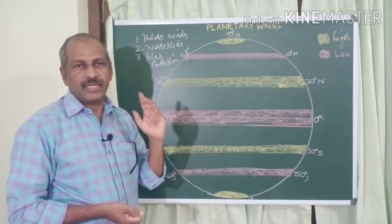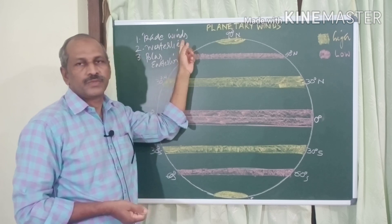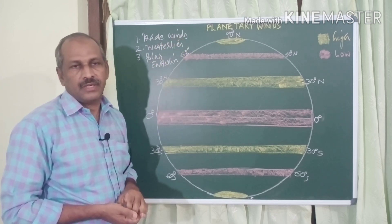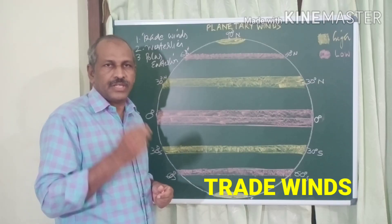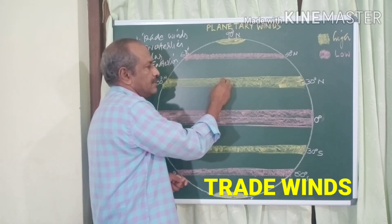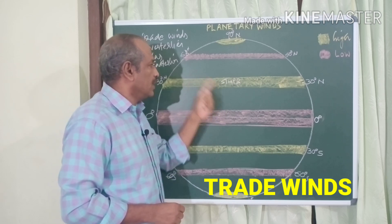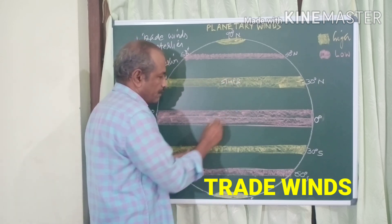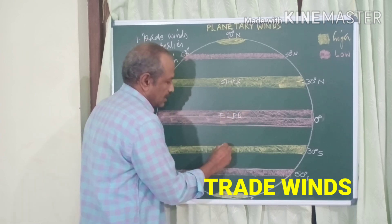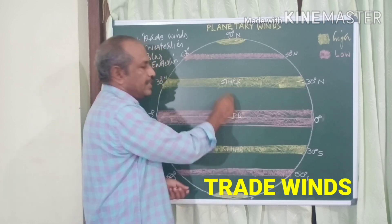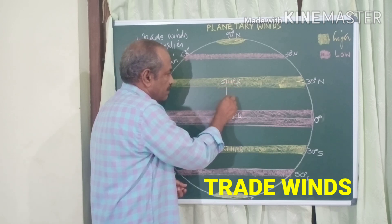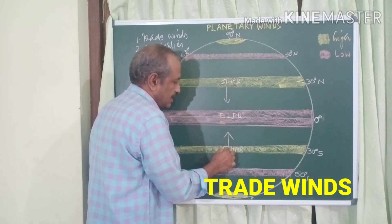There are three types of planetary winds: trade winds, westerlies, and polar easterlies. Let us look at each one. Trade winds are the planetary winds that continuously blow from the subtropical high pressure belt to the equatorial low pressure belt — from high pressure to low pressure.